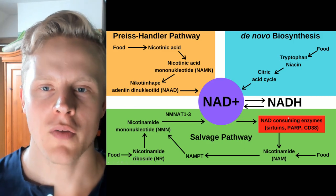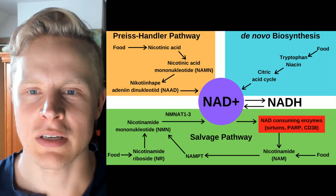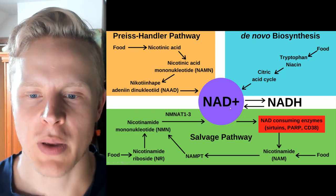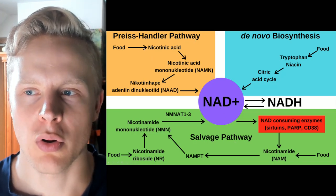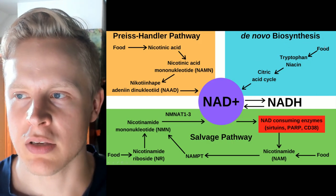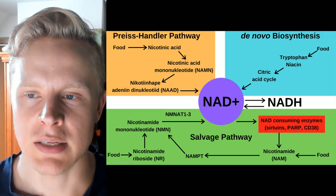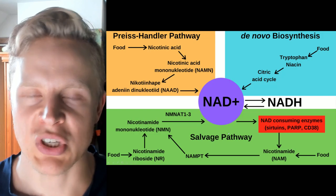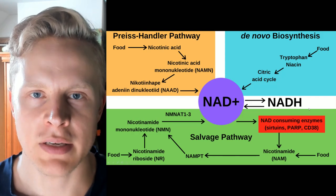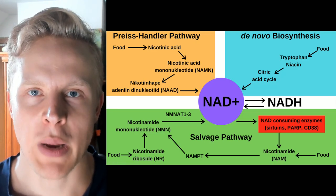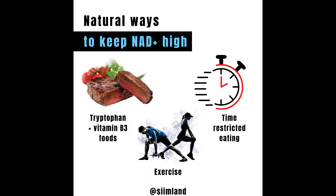So now I'm going to uncover all these different pathways, which are a pretty confusing picture. These are the three main pathways of creating NAD. We have the Preiss-Handler pathway, the de novo biosynthesis pathway, and the salvage pathway. The Preiss-Handler pathway is the one where you convert nicotinic acid from food into NAD+ through different steps. The de novo biosynthesis pathway is also where you convert food — tryptophan and niacin — in the TCA cycle into NAD+. So these are the food pathways, the ones that you get from dietary means.